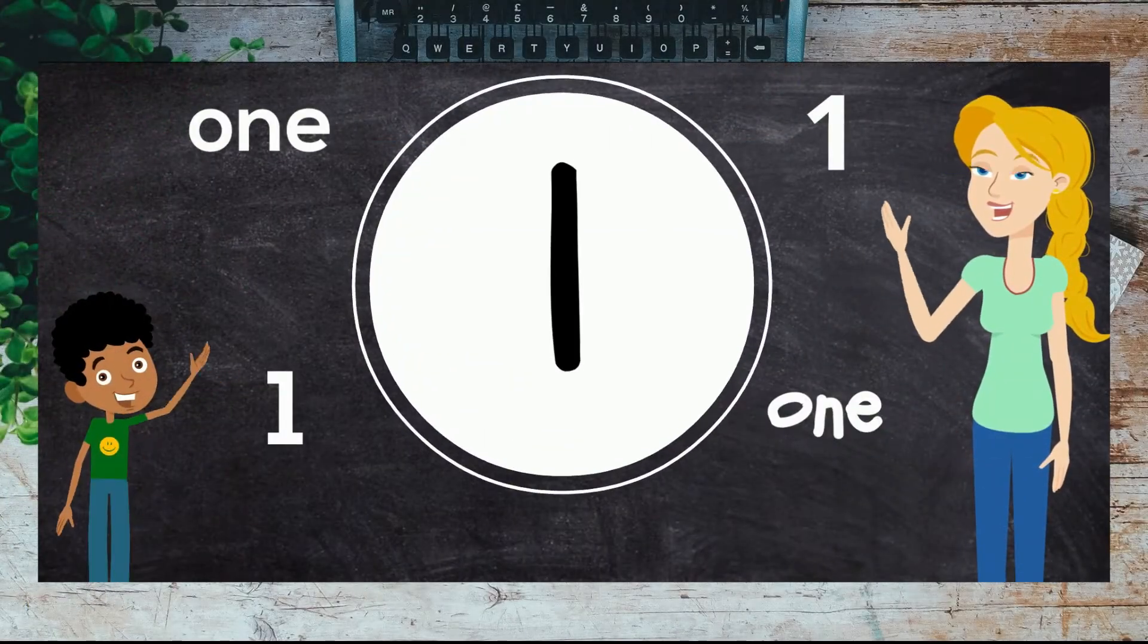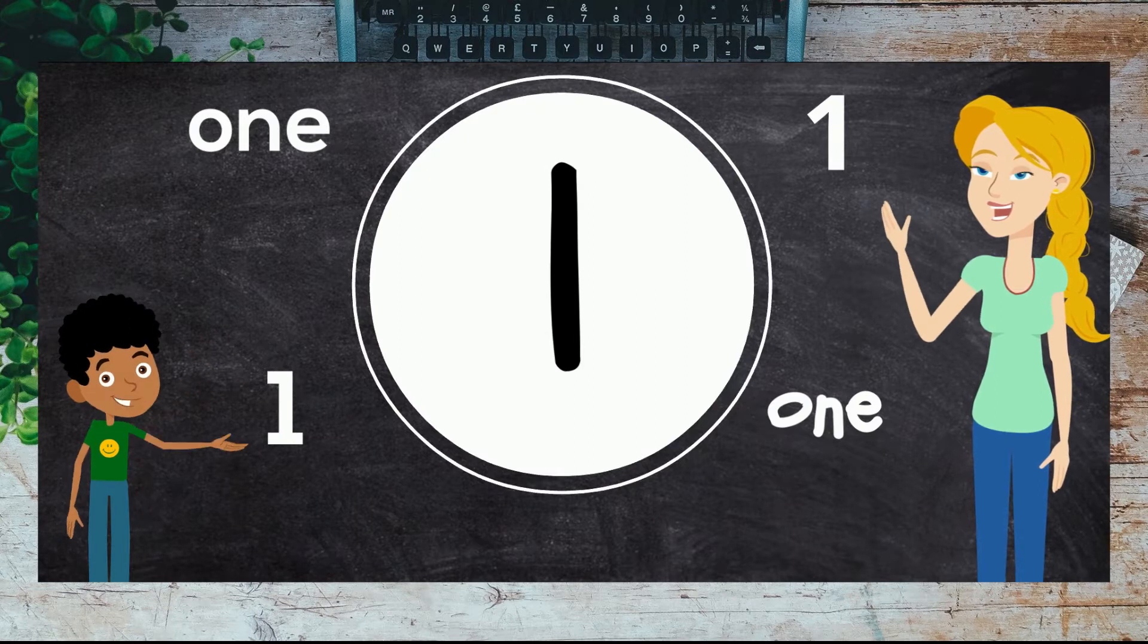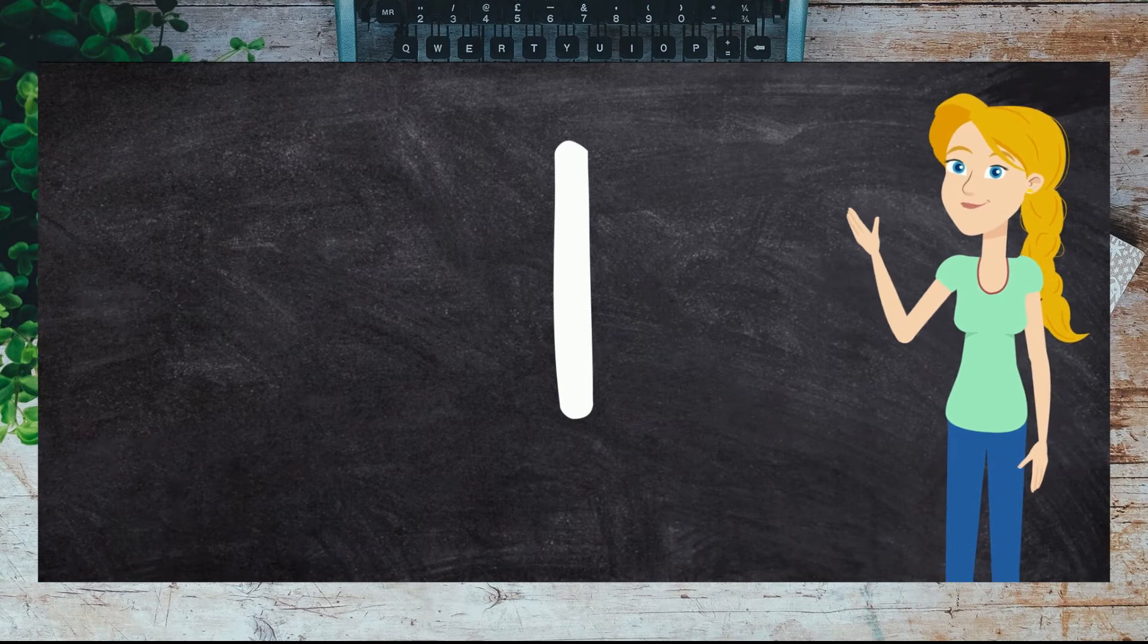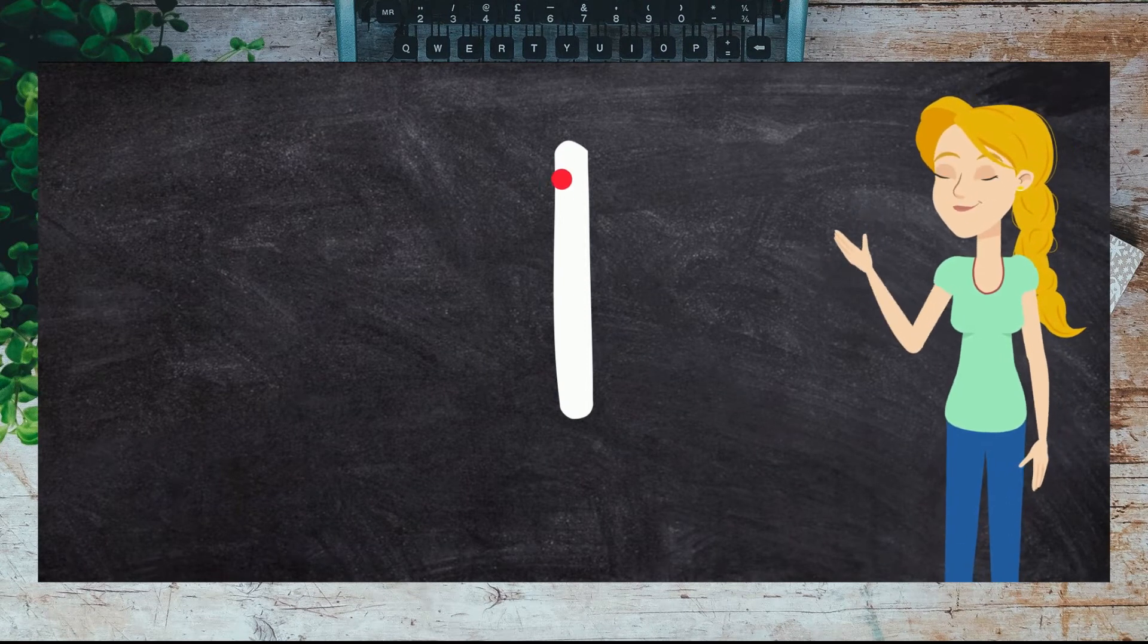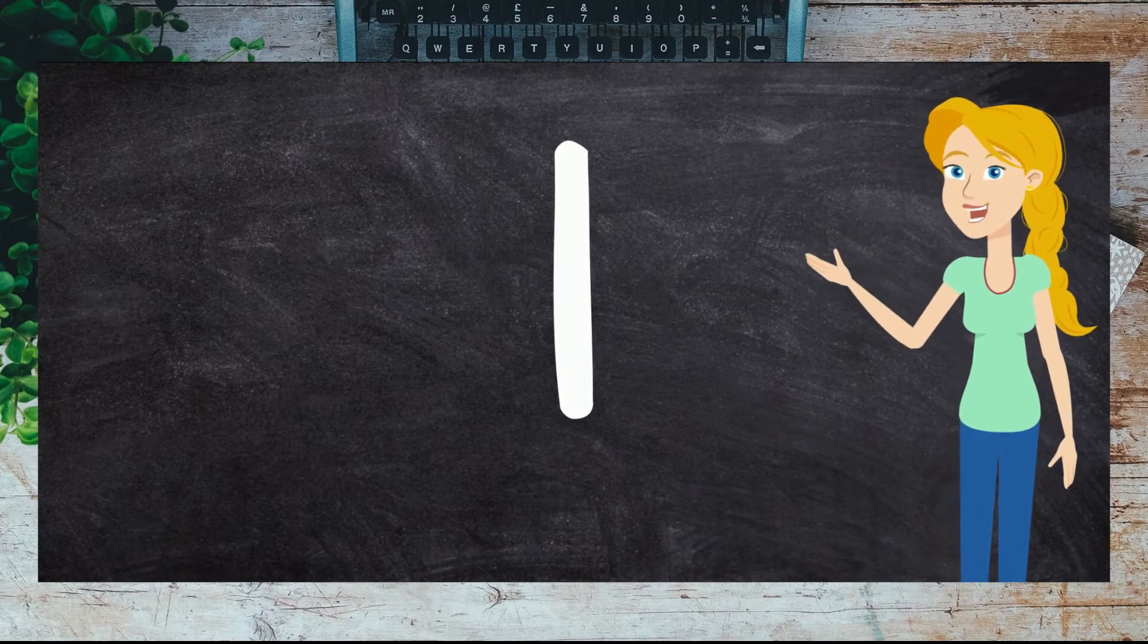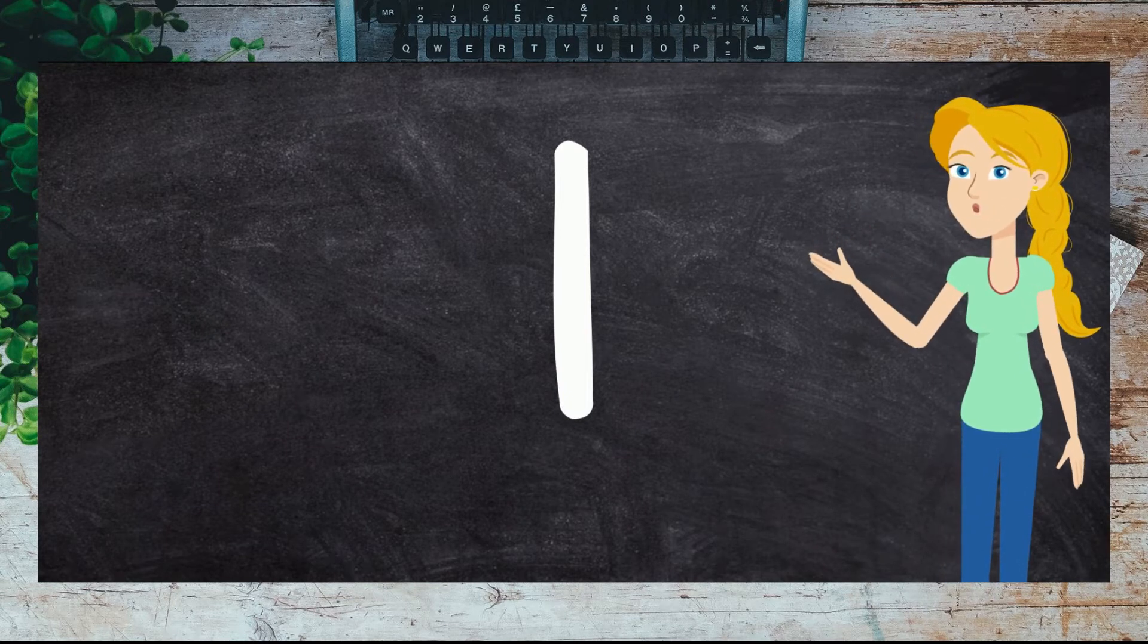Today we are going to learn about the number one. When writing the number one, you start at the top and draw a straight line down. Let's use our fingers to write it in the air, starting at the top and drawing a straight line down.